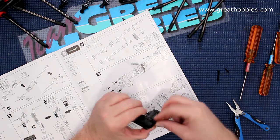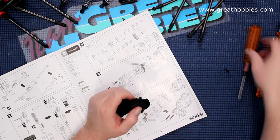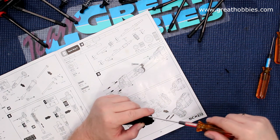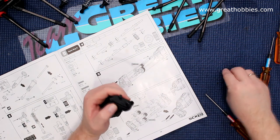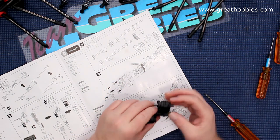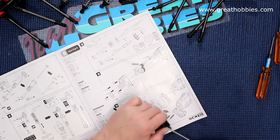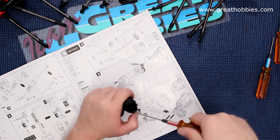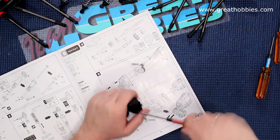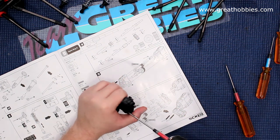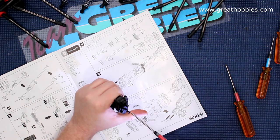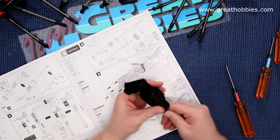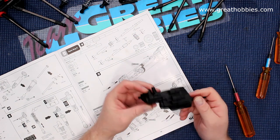Grab your two longest countersunk screws. They go on top, and the smaller one goes on the bottom here. Grab a drill which is a little bit easier. And there you go, this is the transmission fully built.